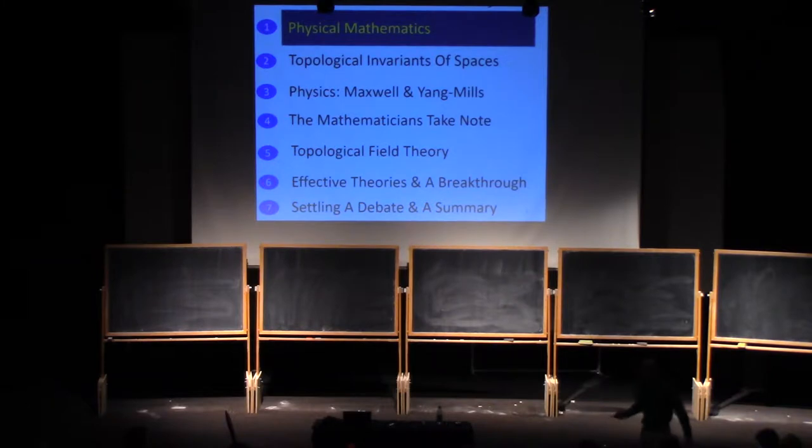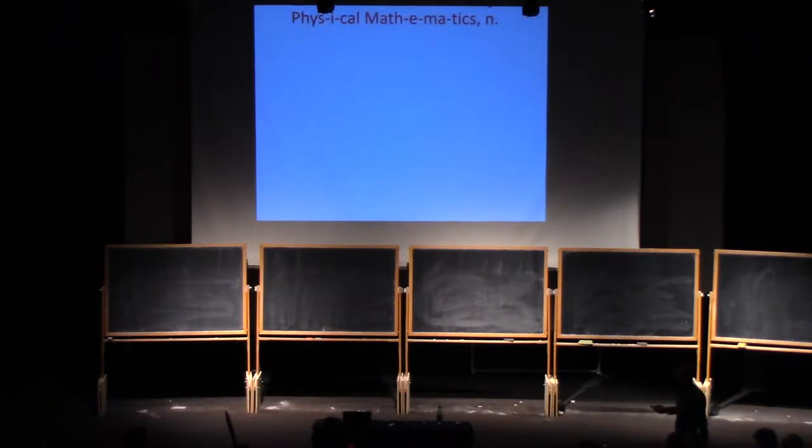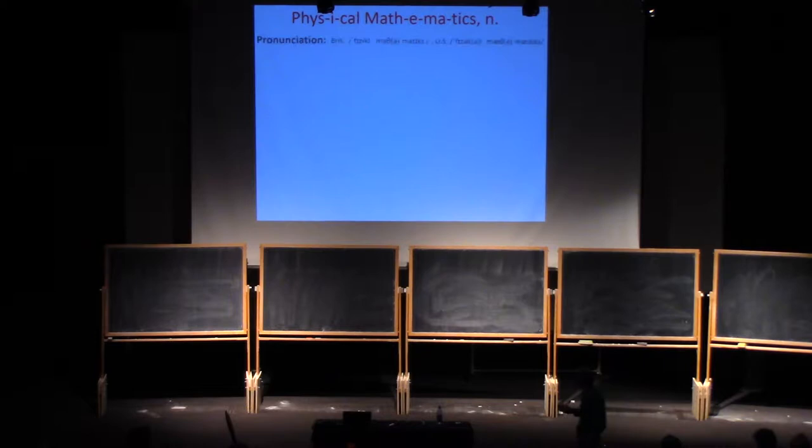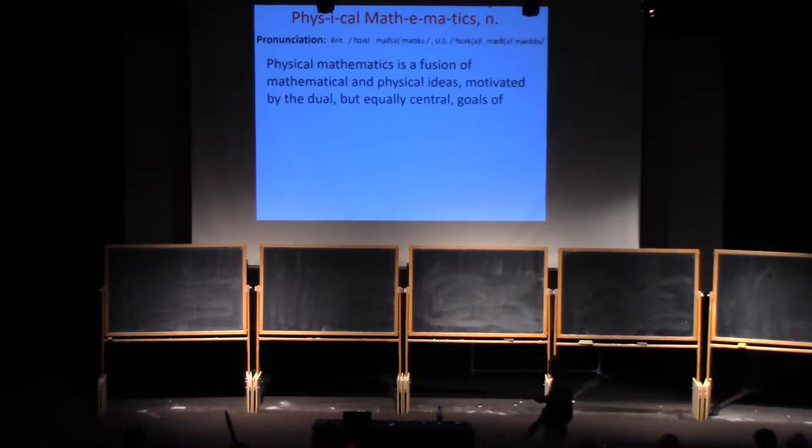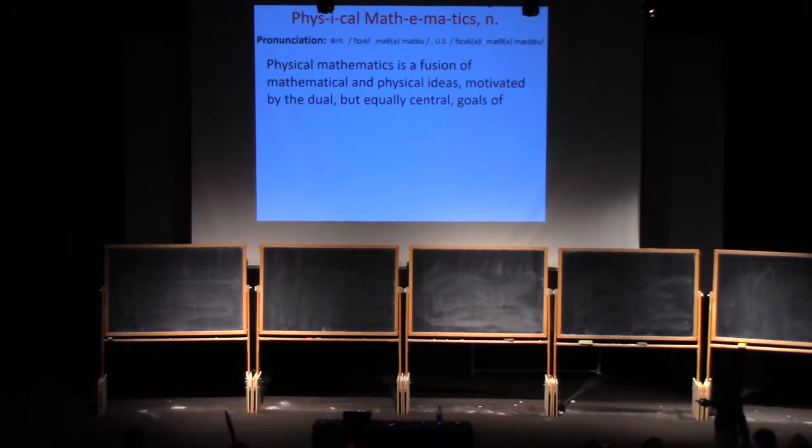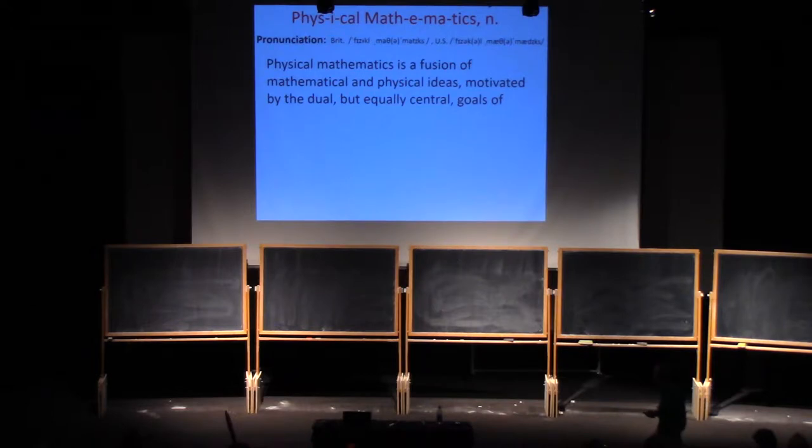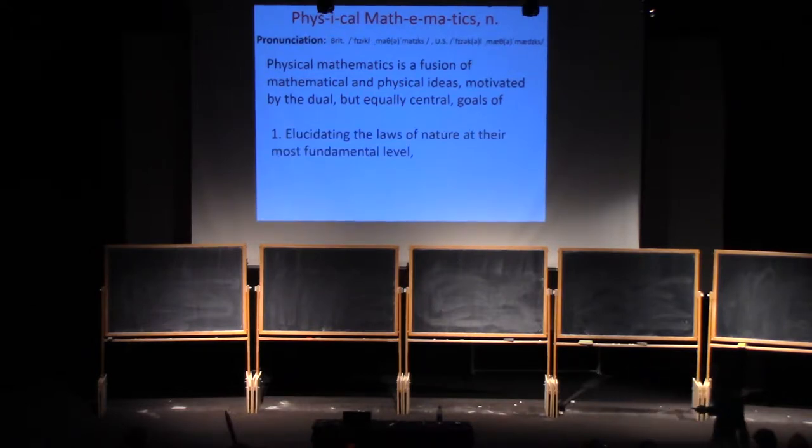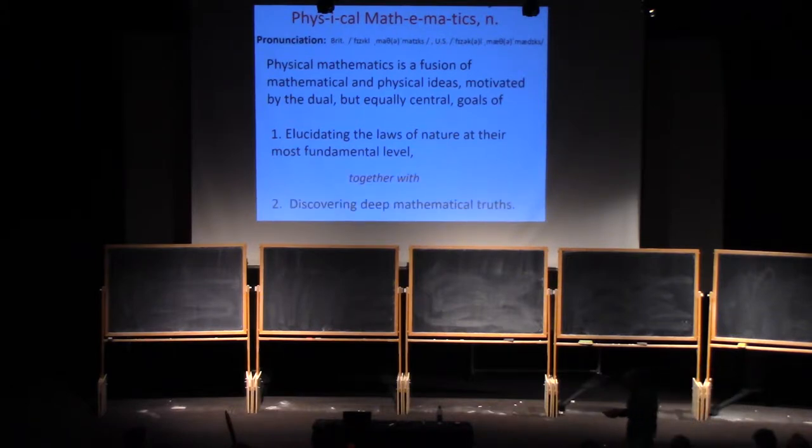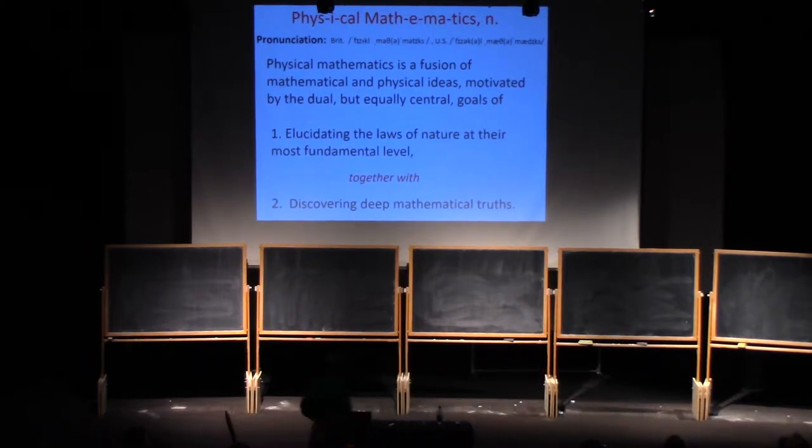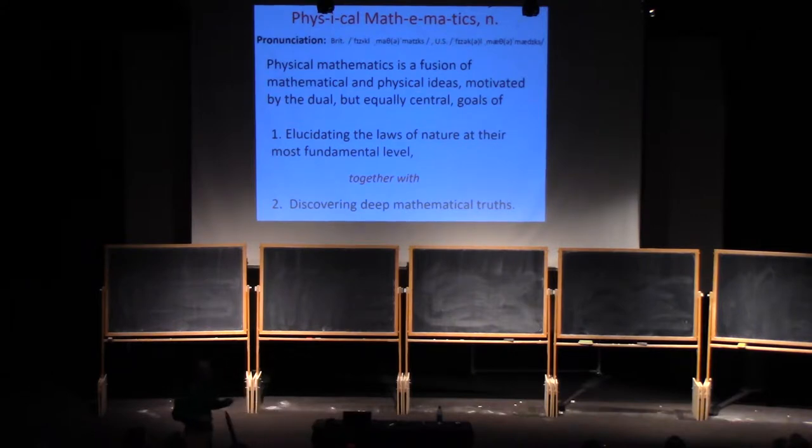What is physical mathematics? It's a noun, and that's how it's pronounced. Physical mathematics is a fusion of mathematical and physical ideas motivated by the dual but equally central goals of elucidating the laws of nature at their most fundamental level, together with discovering deep mathematical truths. That's quite a mouthful, so I want to take a quasi-historical viewpoint.